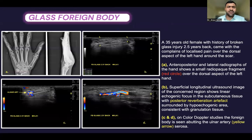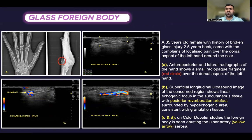Coming to the first case of a retained glass foreign body in a 35-year-old female with a history of broken glass injury 25 years back, who presented with complaints of localized pain over the dorsal aspect of the left hand around the scar site. Anteroposterior and lateral radiographs of the left hand show a small radiopaque fragment over the dorsal aspect of the left hand. Superficial longitudinal ultrasound image shows a linear echogenic focus with surrounding hypoechoic area concerning granulation tissue, giving a posterior reverberation artifact. On color Doppler studies, the foreign body is seen abutting the ulnar artery.